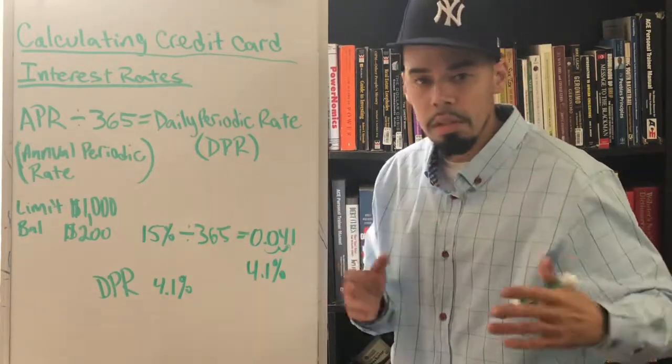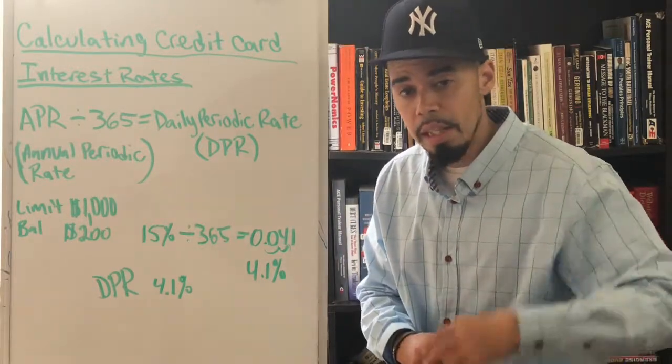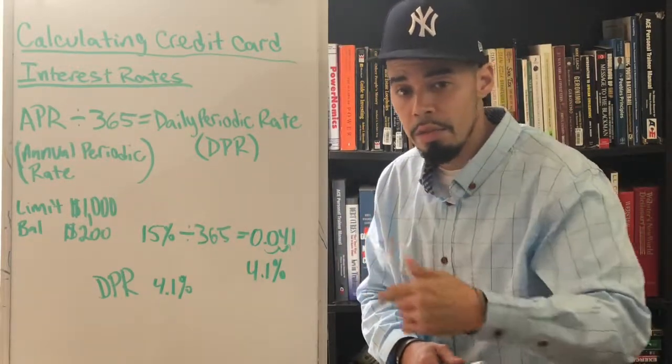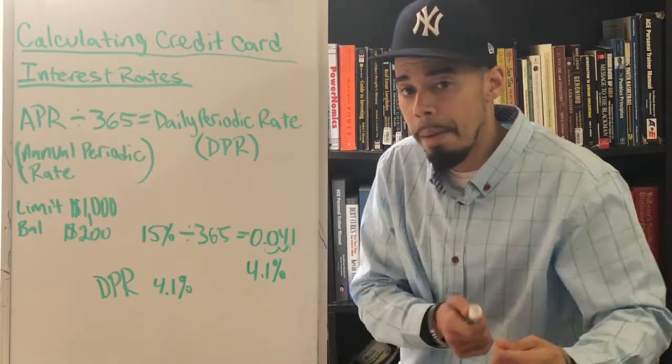If you get a mortgage or a car loan or whatever the case may be and they give you whatever the number is interest rate, that means that they're selling that money to you for that interest rate, for that price. That's how much they charge you for that money.